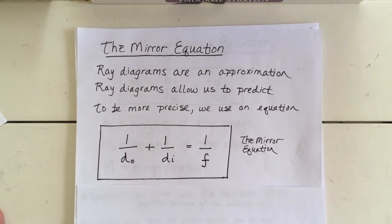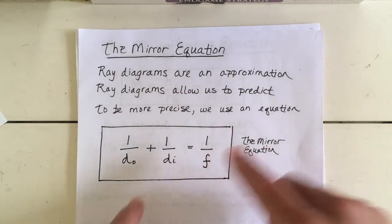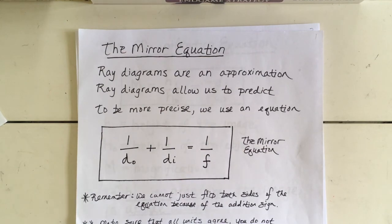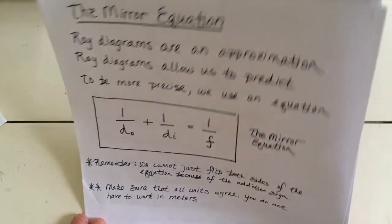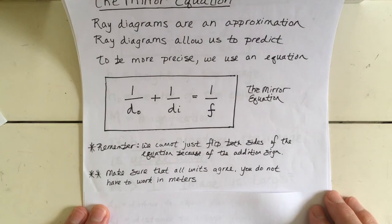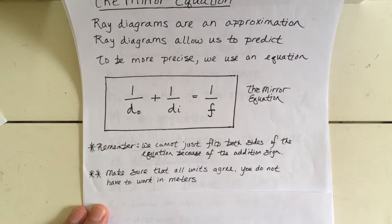Notice that it's all inverted — we can't just flip both sides because of the addition sign, so we have to keep it looking like this. Another thing that comes up with this equation is the units. We don't have to stay in meters like we normally do. You just have to make sure your units agree — you can stay all in centimeters, or all in feet, or all in inches, and that'll be fine.